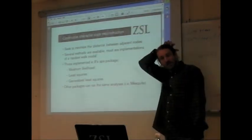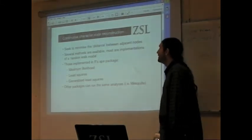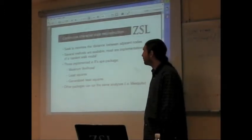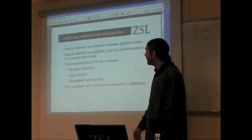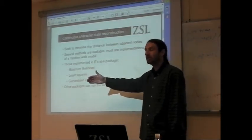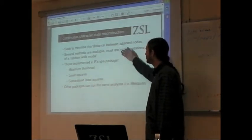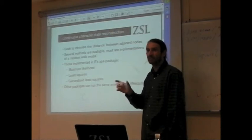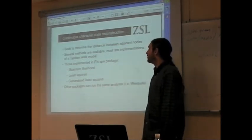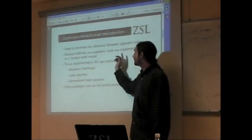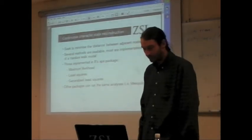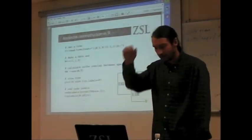Continuous character state reconstruction essentially just minimizes the distance between adjacent nodes in the phylogeny using one of several different methods. It essentially assumes a continuous character change across the line. Typically we'd use something like square change parsimony, where we're minimizing the square of the difference between one node and the next. You can implement this using the ape package in R, which has three different methodologies — least squares or generalized least squares. Other packages run the same sorts of analysis.